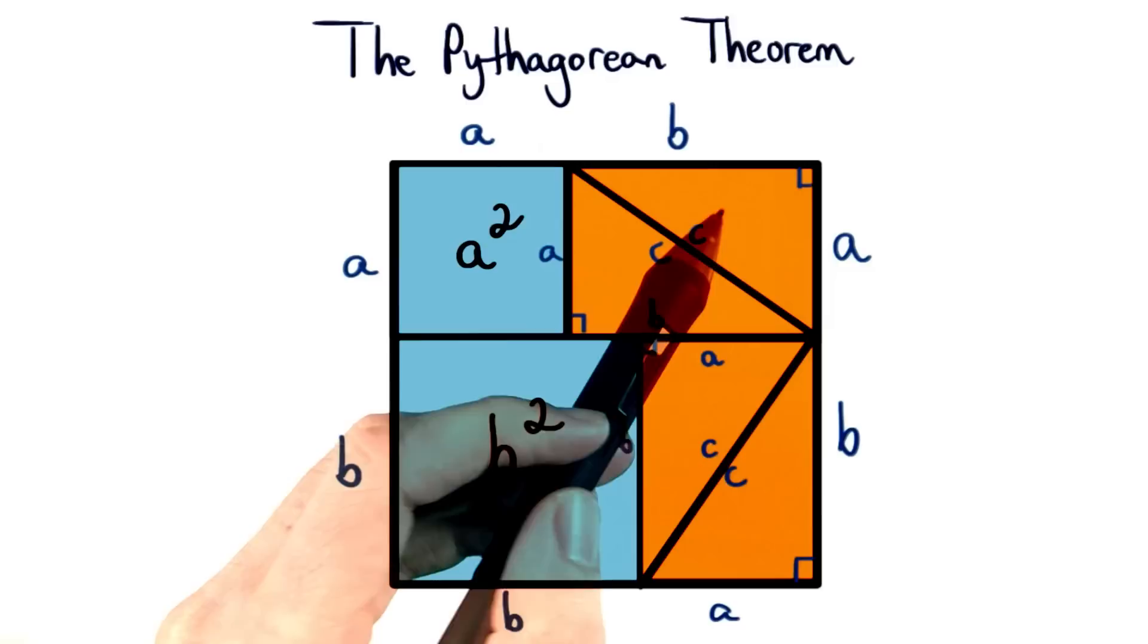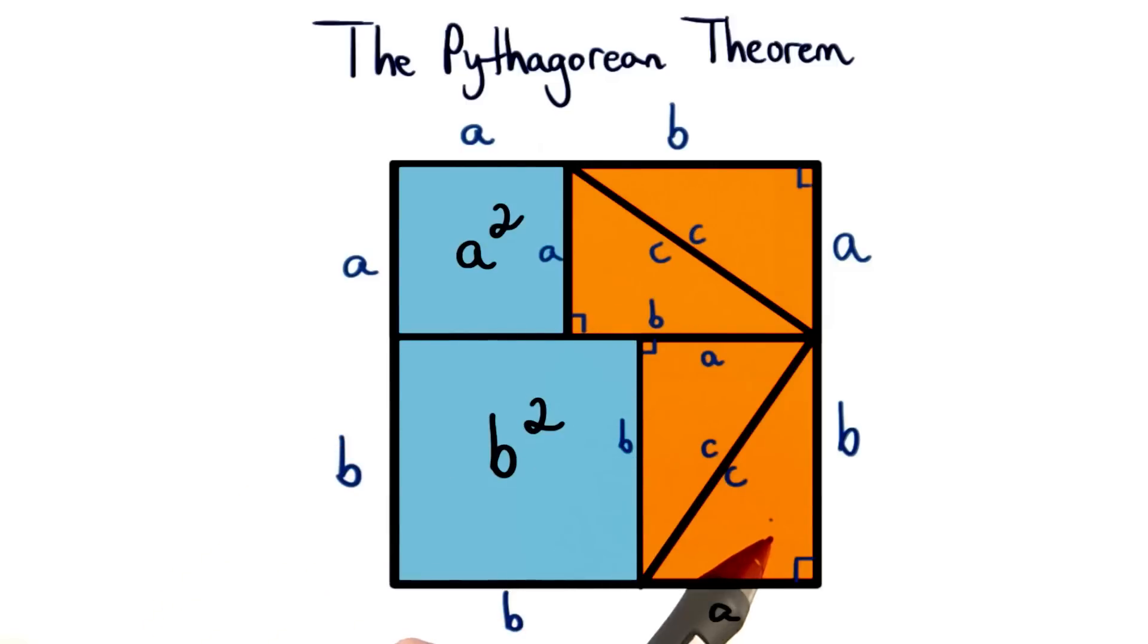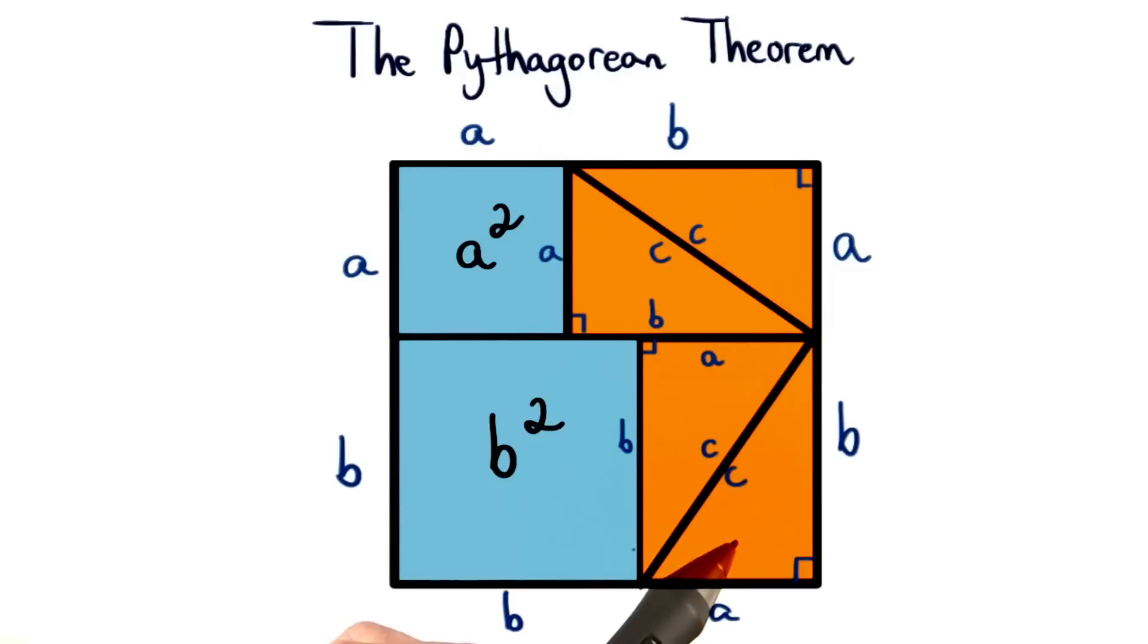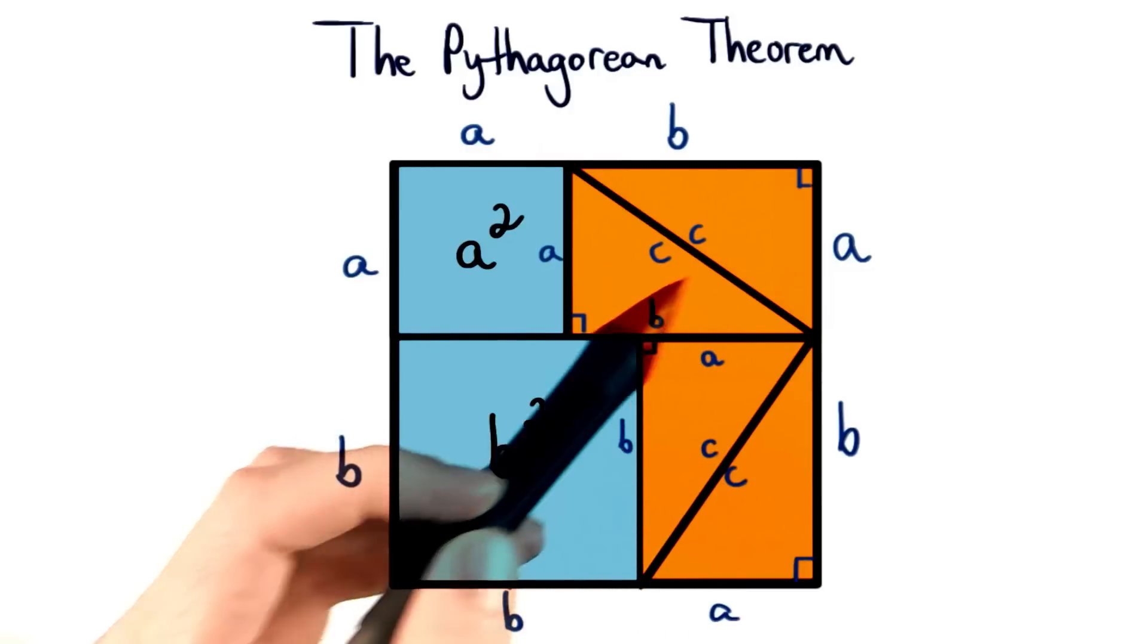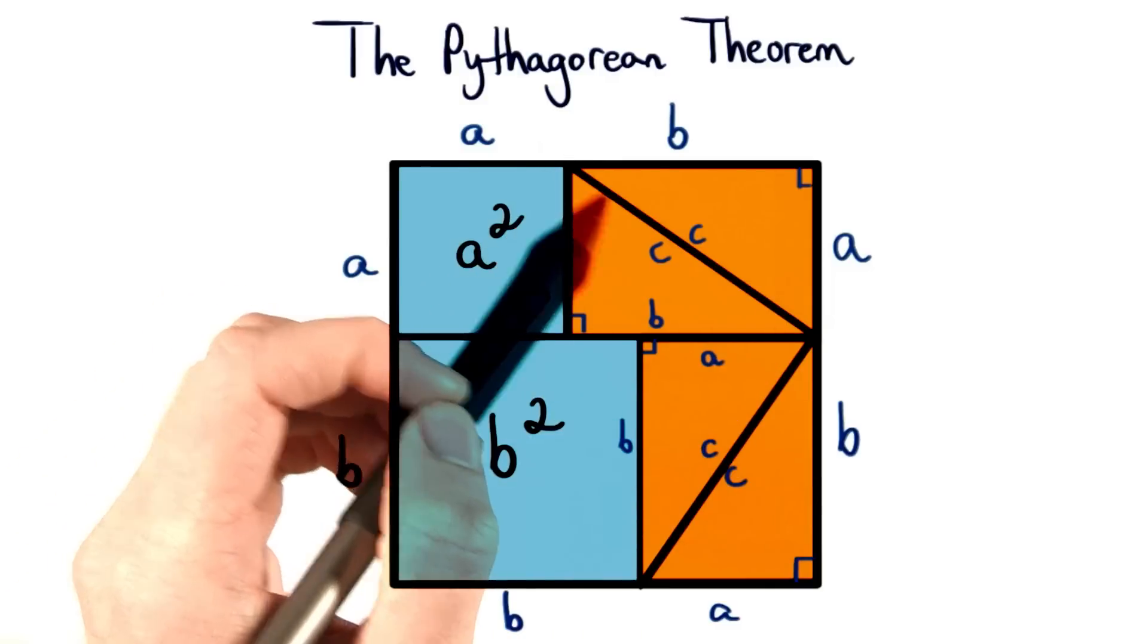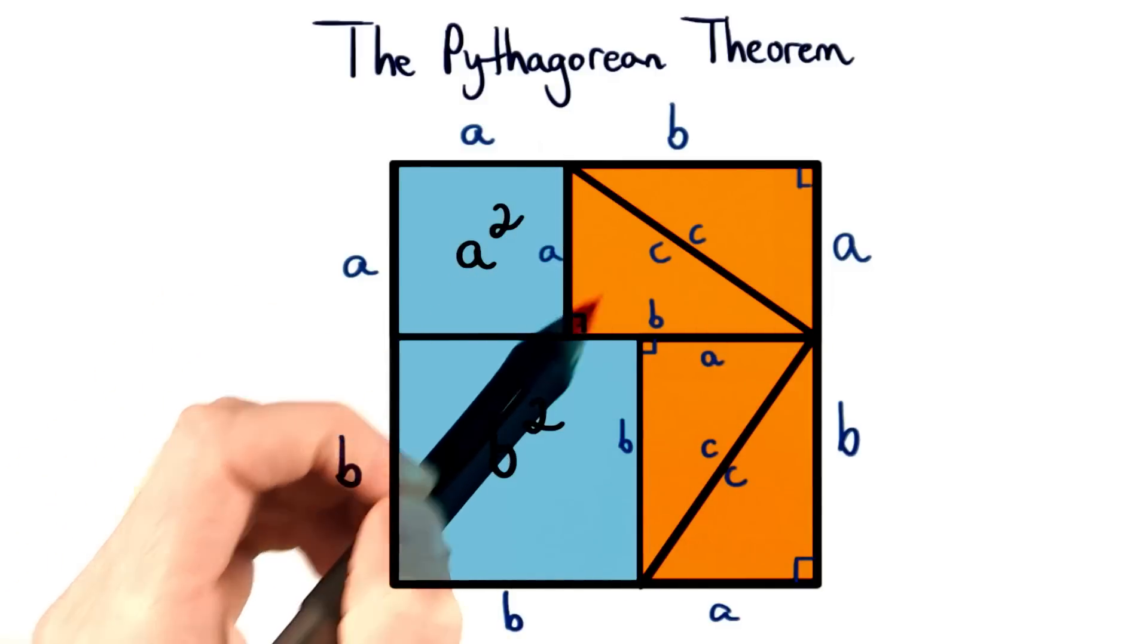So notice that all four of these triangles are identical. They all have a leg of a, a leg of b, and a hypotenuse of c. The four triangles are just oriented in different ways. Like for this one, here's a, here's b, and here's the hypotenuse across from the 90 degree angle, c.